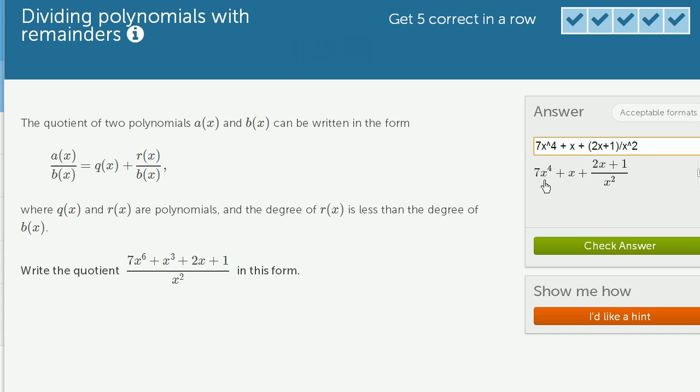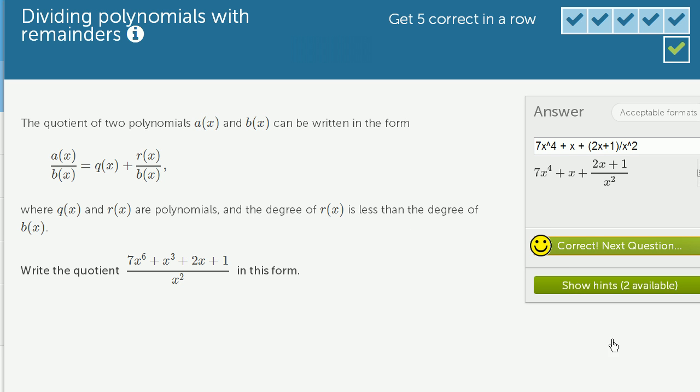7x to the 6 divided by x squared is 7x to the fourth. x to the third divided by x squared is x. And then once I got two terms that had a lower degree than x squared, I just left them there. I just said, plus whatever 2x plus 1 divided by x squared is. And that's the form that they wanted us to write it in. We'll check our answer, and we got it right.